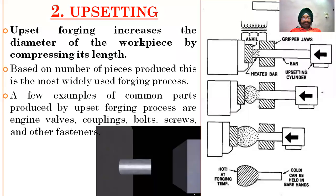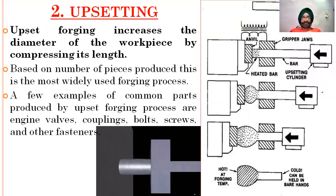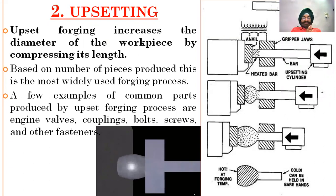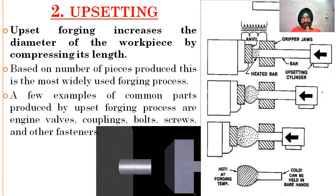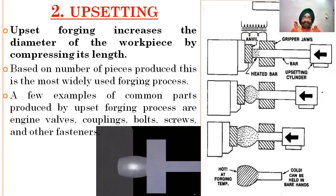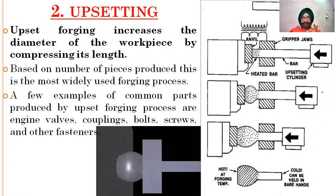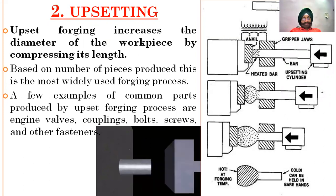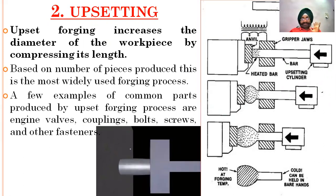The second is upsetting. Upsetting forging increases the diameter of the workpiece by compressing its length. Based on number of pieces, it is the most widely used forging process — the length is reduced and diameter is increased. Examples include engine valves, couplings, bolts, and screws, which are all made by upsetting.